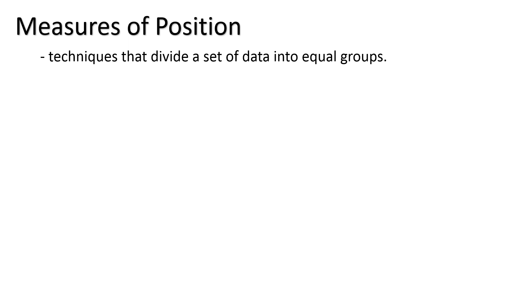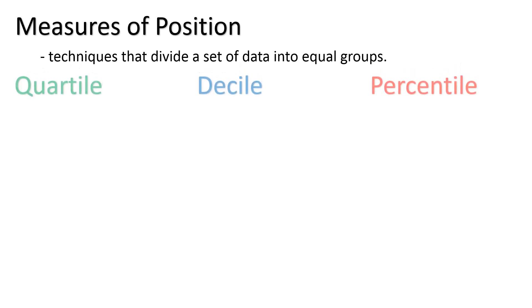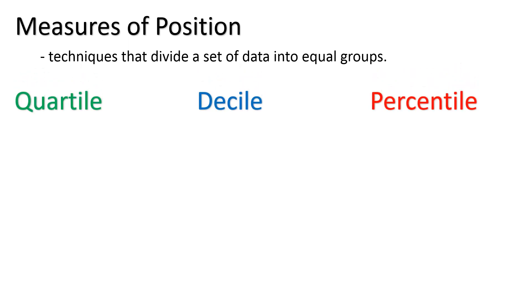There are three different ways to determine the measures of position. They are the quartile, the decile, and the percentile.